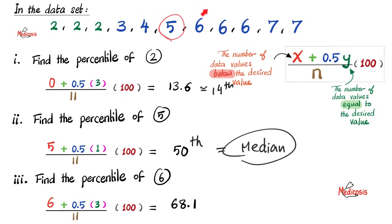Next, find the percentile of this 6. How do you do so? How many values exist before it? 1, 2, 3, 4, 5, 6. Okay, so 6 is my X plus half times Y. How many times is this 6 repeated? 1, 2, 3. 3 times, put 3 here. Divide by 11. Multiply by 100 to get the answer of 68.1, which is approximated to the 68th percentile.